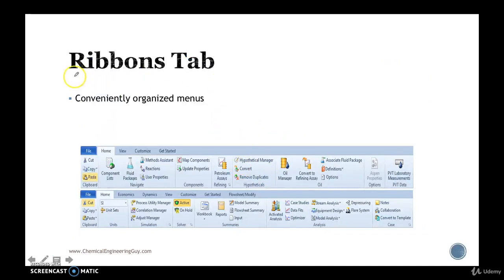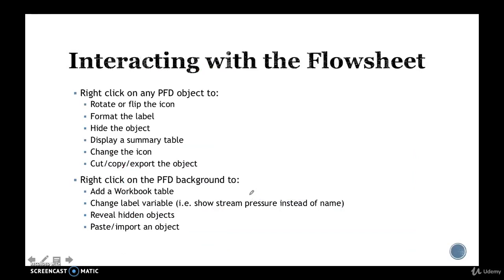A ribbon is essentially conveniently organized menus. For instance, this is the property ribbons and this is the simulation ribbon tabs. You don't need to learn them, just get a little bit comfortable changing between environments. The physical environment lets you choose component list and fluid packages. For simulation, you'll definitely be using the flowsheet tab.